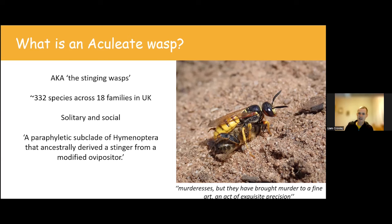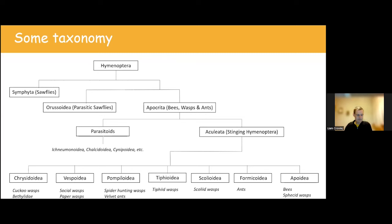If I was writing a dictionary entry for Aculeata, I'd say it's a paraphyletic subclade of Hymenoptera that ancestrally derived a stinger from a modified ovipositor. To understand that, we need some taxonomy. We go back to the early Triassic, where the order Hymenoptera first evolved. The very first ones were sawfly-like insects that lay eggs in plants; the larvae consume the host plant, eventually pupate, and the adult sawfly emerges to repeat the cycle.